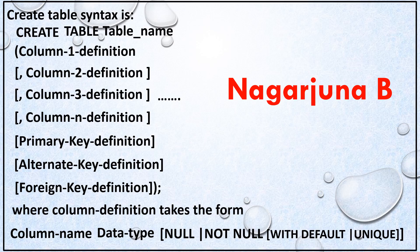To summarize column definition: column name is the attribute or field name; data type indicates the domain; NULL means you can leave the value empty at insertion; NOT NULL means you must give a value. With NOT NULL, WITH DEFAULT supplies a value automatically if none is given, and UNIQUE ensures the column value is never duplicated.